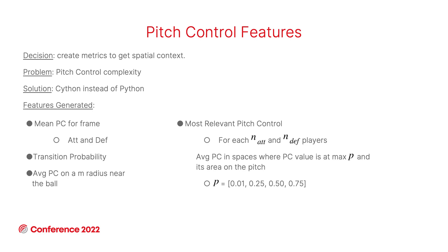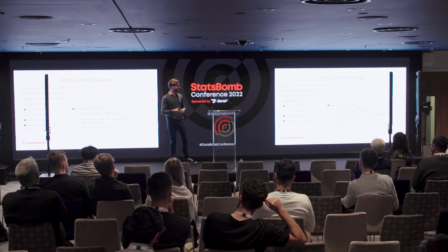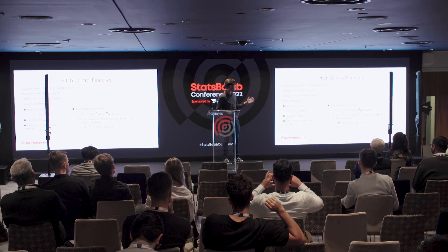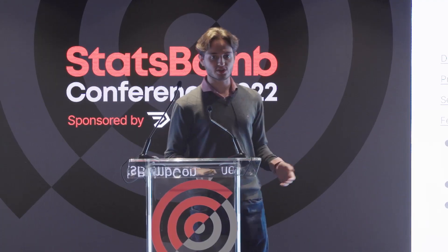Now let's talk about pitch control features. We decided to create metrics to capture the spatial context, but the problem is pitch control's complexity. To make it feasible, we transformed the Python implementation into a Cython one. Now in only two seconds we can have a pitch control frame. But we have a huge number of actions, so it still took a long time to obtain them all. Once we obtained them, we generated some features.